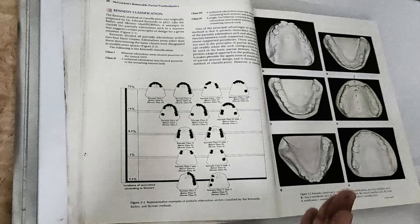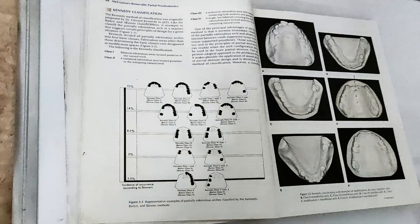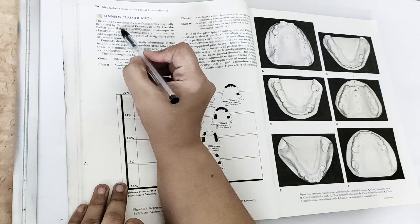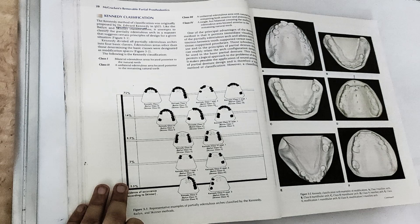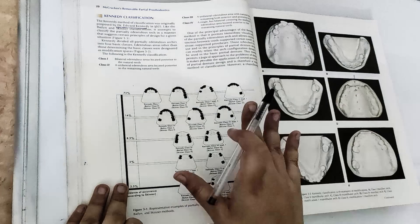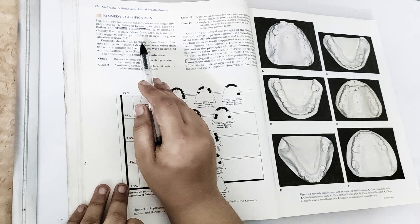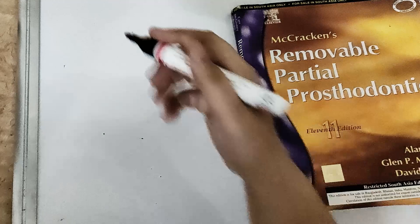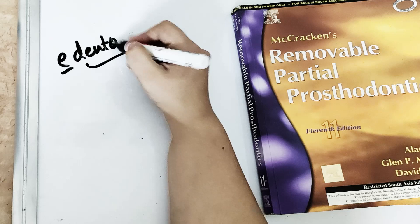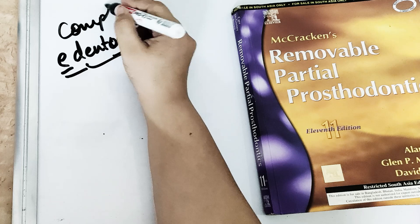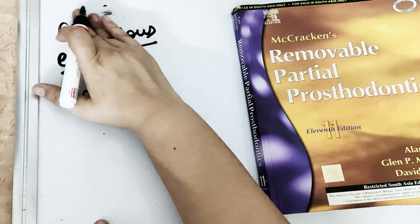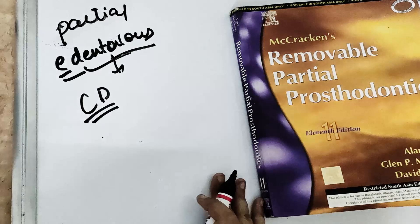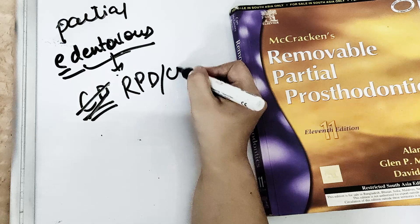Kennedy's classification was given by Dr. Edward Kennedy in 1925. It is the most applicable classification we follow — a classification of partially edentulous arches. Edentulous means without teeth; completely edentulous means no teeth are present, in which case we give complete dentures. Partially edentulous means some teeth are present and some are missing, in which case we give RPD or fixed prosthesis.